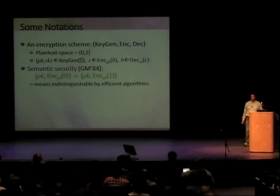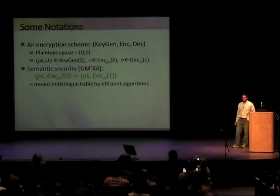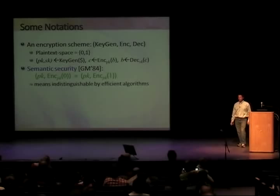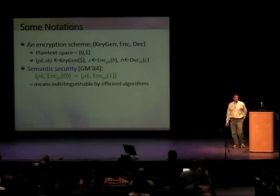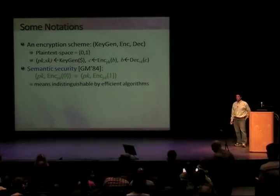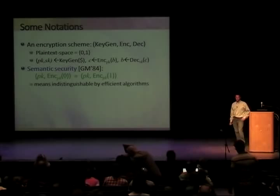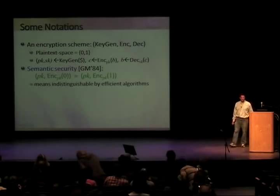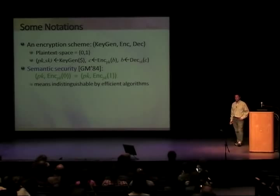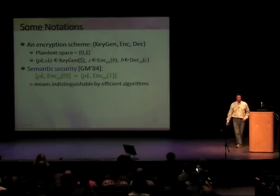Before we start, let's set up some notation. We're talking about an encryption scheme, which has three components: key generation, encryption, and decryption. Throughout the tutorial, the plaintext space is always going to be {0, 1}, so we're always encrypting individual bits. The key generation gives us a public and a secret key. Encryption takes the public key and a bit and gives a ciphertext. Decryption recovers the bit. The notion of security we care about is semantic security — the Goldwasser-Micali notion — which means the distribution of public key and encryptions of 0 is indistinguishable from encryptions of 1 by any polynomial-time algorithm.